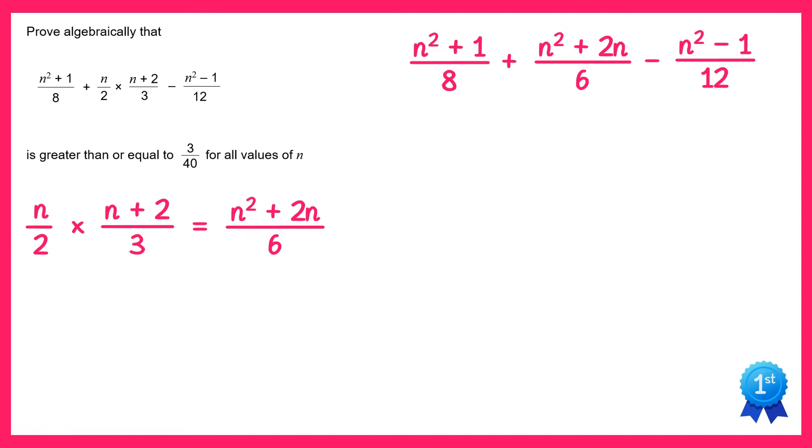At the moment these all have different denominators, so let's get them all over a common denominator of 24. To do this I multiply the first fraction by 3 over 3, so that would give me 3n squared plus 3 over 24. The second fraction I times by 4 over 4, so that's 4n squared plus 8n over 24. And the final fraction we double the top and bottom, so it's 2n squared minus 2 over 24.